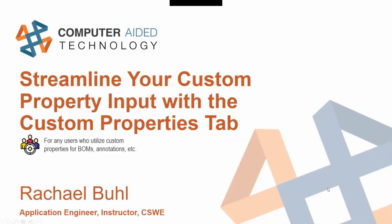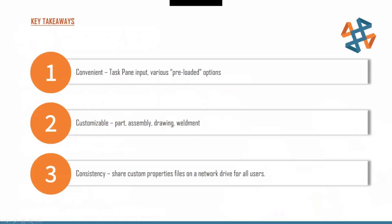Let's talk about the key takeaways. Using the custom property tab is super convenient — it's right on the task pane and involves a lot of preloaded options. You can also customize it to suit your needs for part files, assembly files, drawing files, and even specifically for weldment files. This also gives you a great step forward in your consistency goals, such as sharing a custom properties file on a network drive so all users are using it.